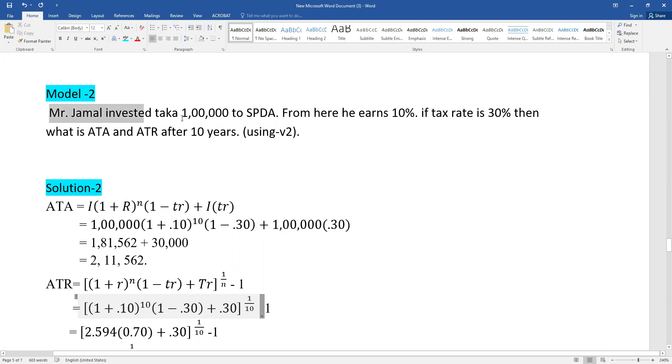Model 2: Mr. Jamal invested 1,00,000 taka to SPDA. From here he earns 10%. If the tax rate is 30%, then what is ATA and ATR after 10 years using volume 2?